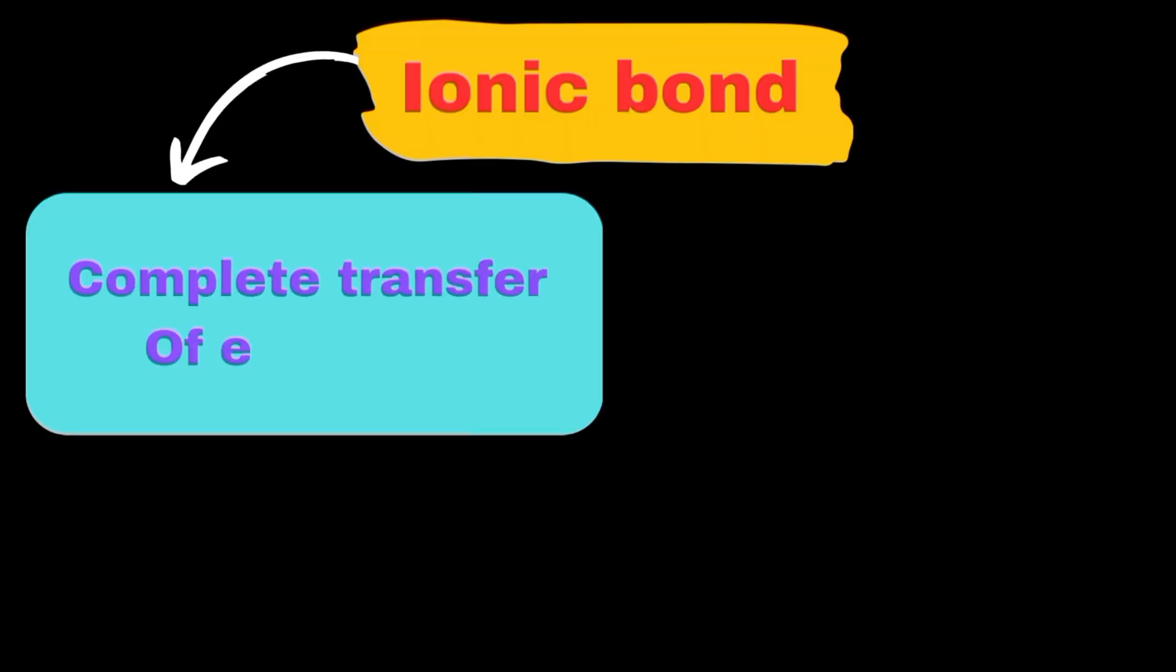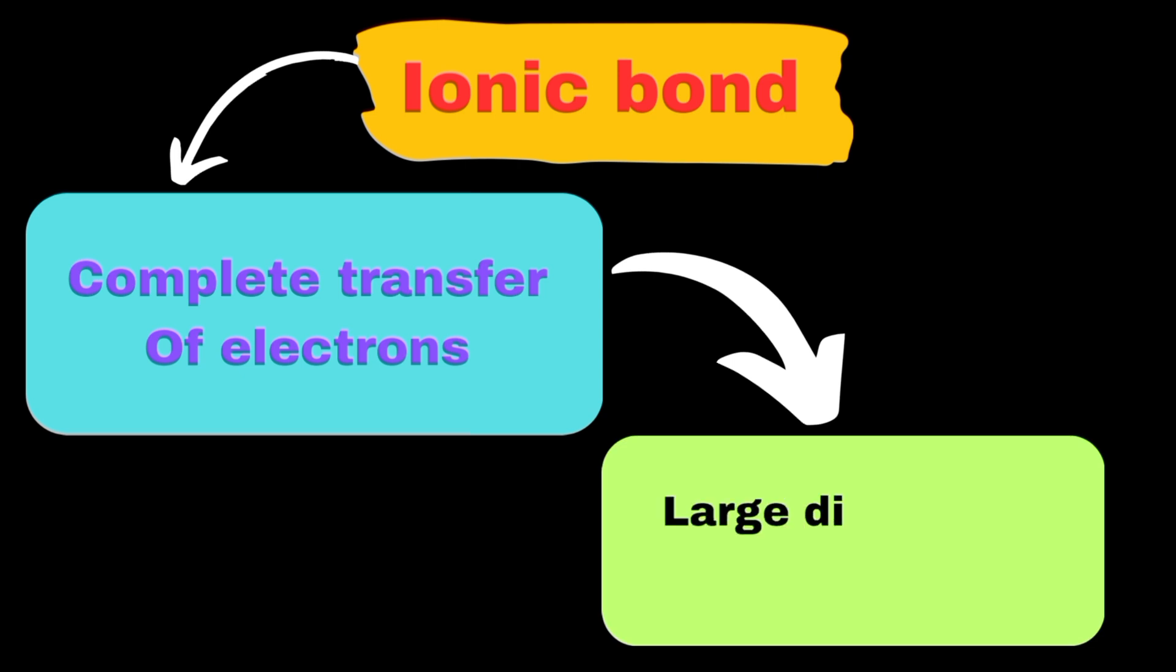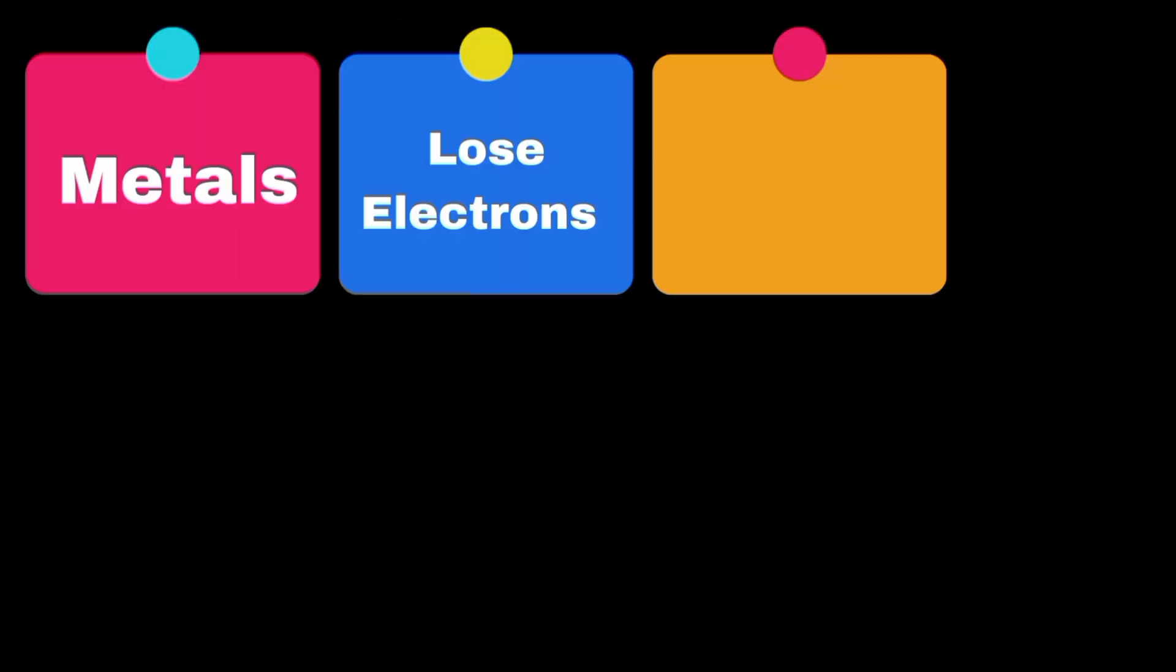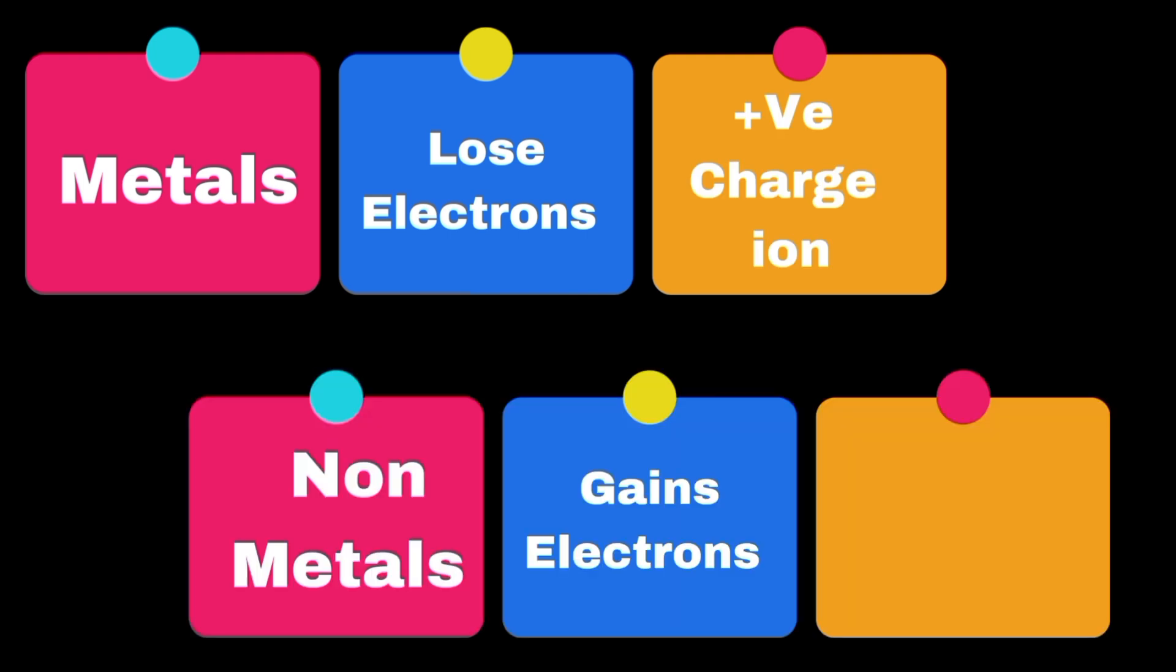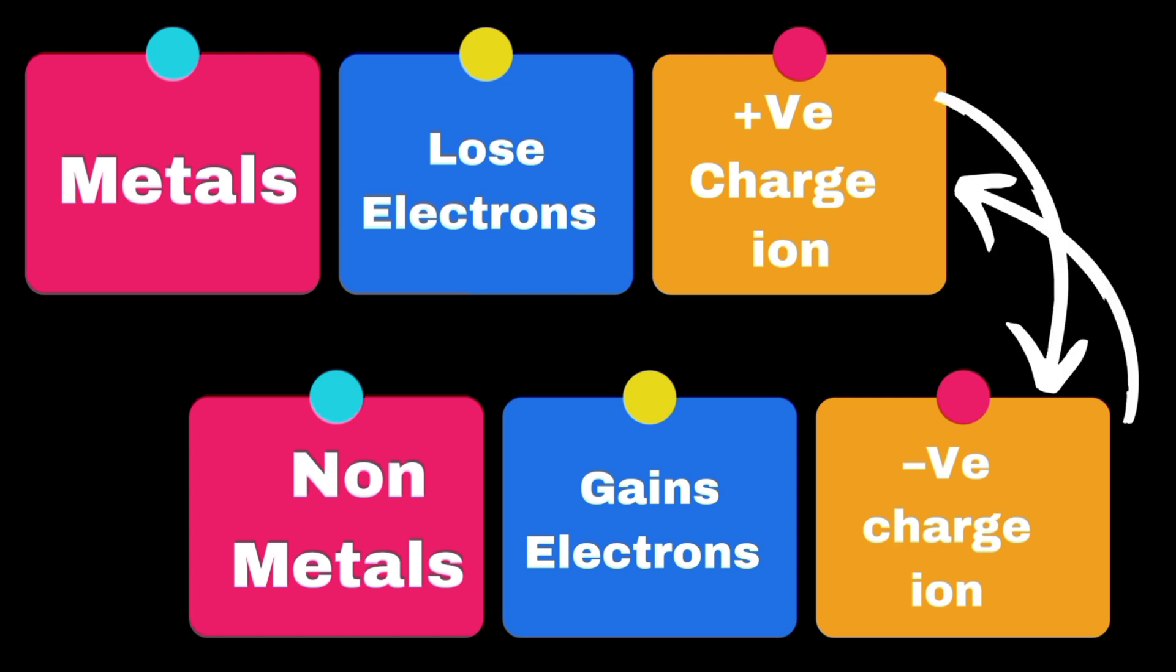Ionic bonds form when one atom transfers electrons to another. This happens between atoms with a large difference in electronegativity, such as metals and nonmetals. The metal atom loses electrons, becoming a positively charged ion, while the nonmetal gains these electrons, becoming a negatively charged ion. These opposite charges attract each other, creating a strong electrostatic bond.